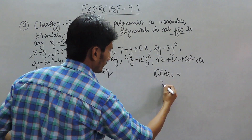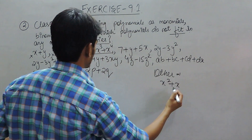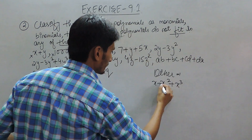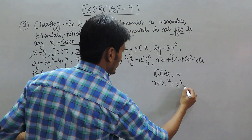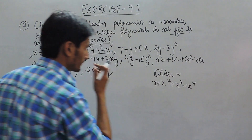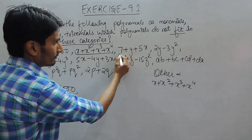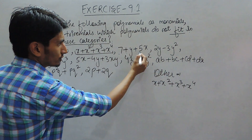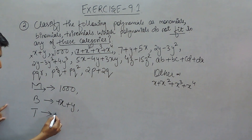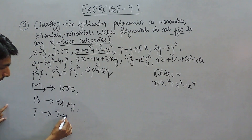This expression is x² + x³ + x + x² + x³ + x⁴. This term has one, two, three terms. So this comes in the category trinomial.